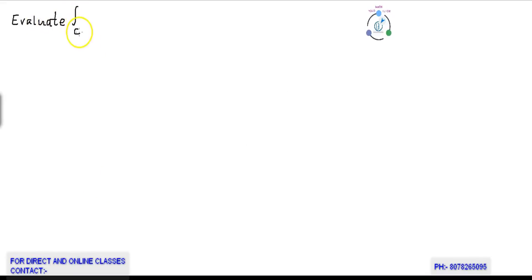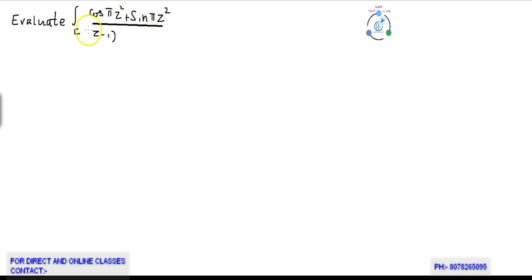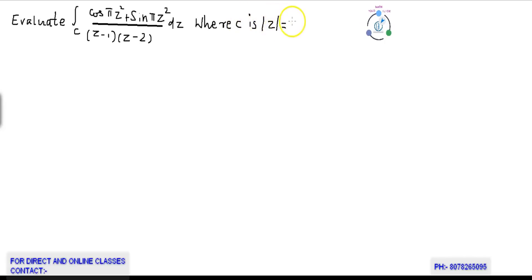Evaluate the integral over C of (cos πz² + sin πz²) / ((z−1)(z−2)) dz, where C is |z| = 3, using Cauchy's residue theorem.